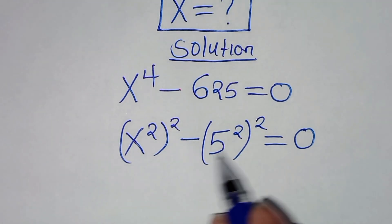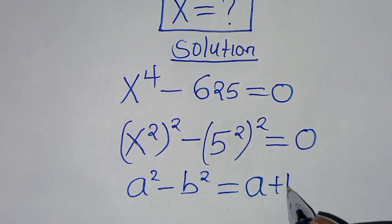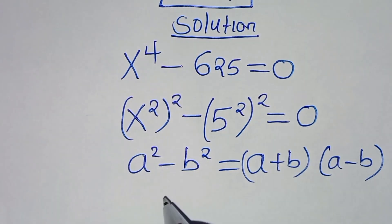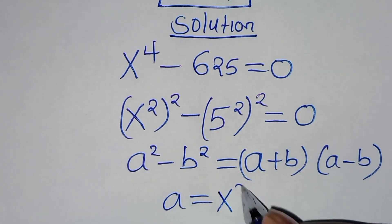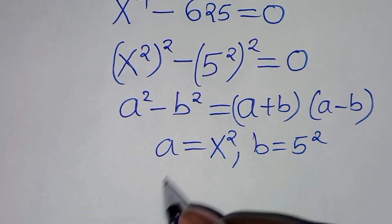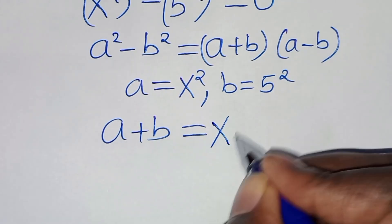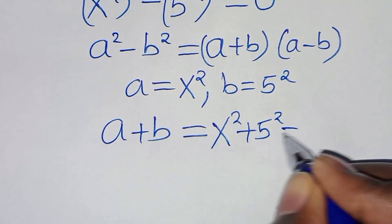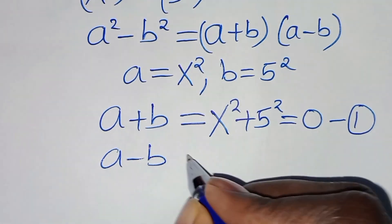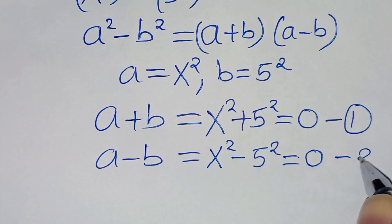Now, you find that this equation is in the form of a squared minus b squared, which we can express as (a plus b)(a minus b). From this equation, we have that a is equal to x squared and b is equal to 5 squared. So this implies that (a plus b) equals x squared plus 5 squared equals 0 — call this equation 1. And (a minus b) equals x squared minus 5 squared equals 0 — call this equation 2.